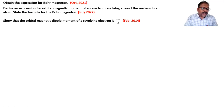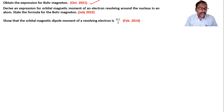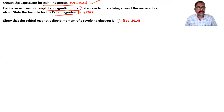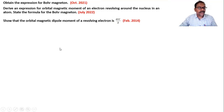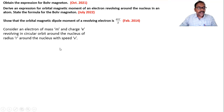This question asks to obtain the expression for Bohr's magneton. The next question is to derive the expression for the orbital magnetic moment of a revolving electron around the nucleus, and state Bohr's magneton formula. The question may also be asked as: show that the orbital magnetic dipole moment of a revolving electron is evr/2. These are several questions asked on these topics.